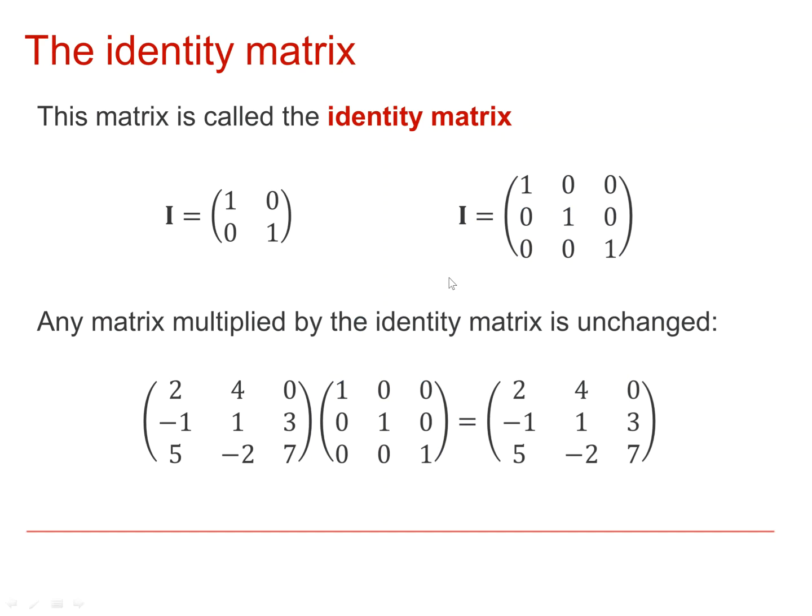The first matrix we looked at was an identity matrix. It has 1s in the leading diagonal and 0s everywhere else. When you multiply by an identity matrix, the matrix is unchanged.